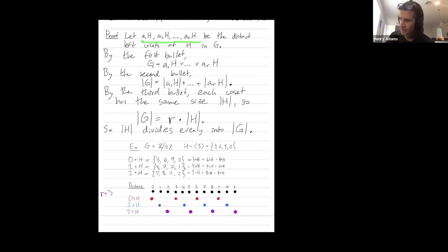So we consider the distinct left cosets. For this example, we have three left cosets. So R is equal to three.